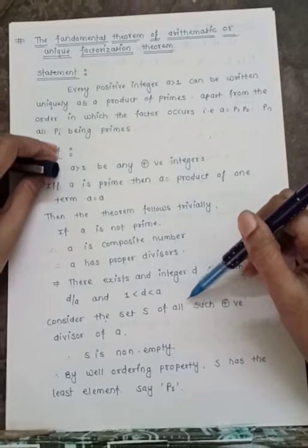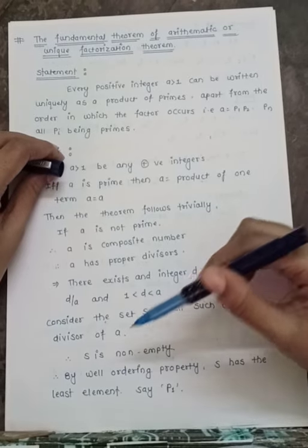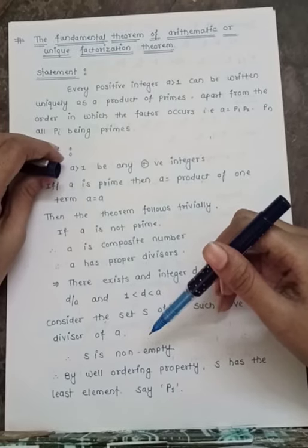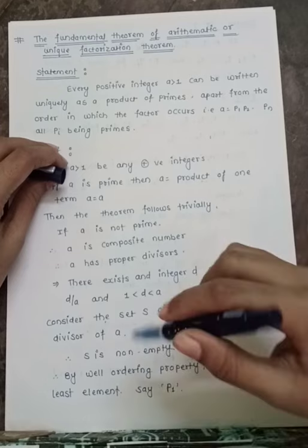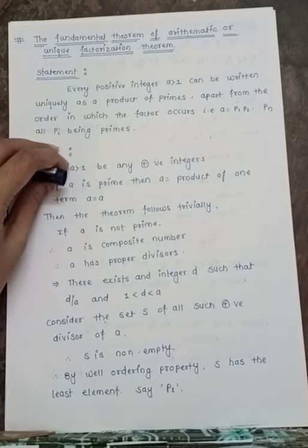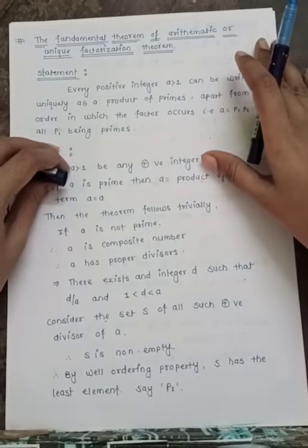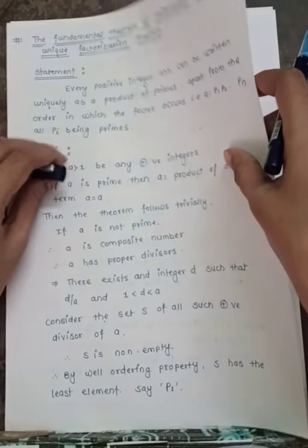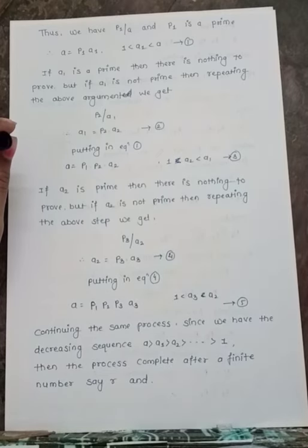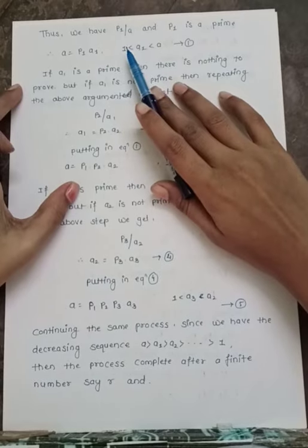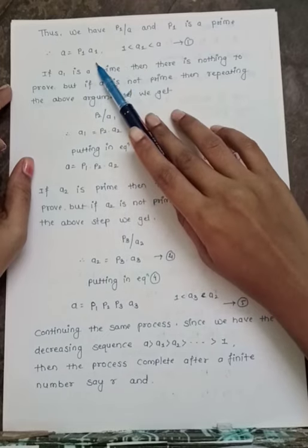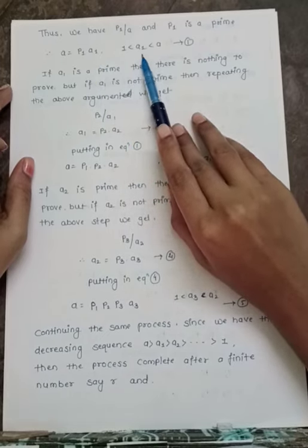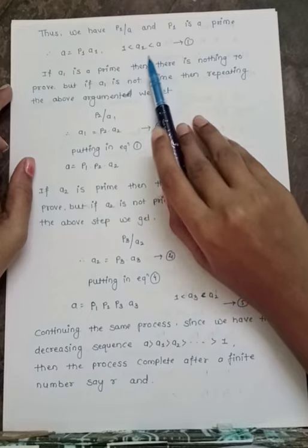Consider the set S of all such positive divisors of a. Therefore S is non-empty, and by the Well-Ordering Property, S has a least element. Let this least element be p1. Thus we have p1 divides a and p1 is a prime, therefore a = p1 · a1 where 1 < a1 < a. This is equation 1.